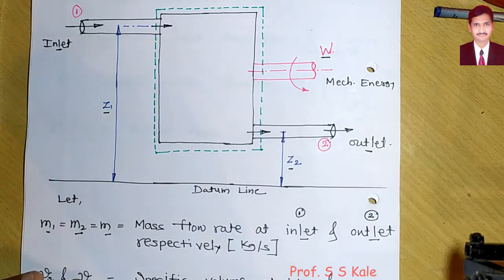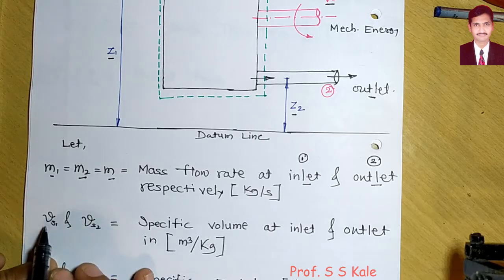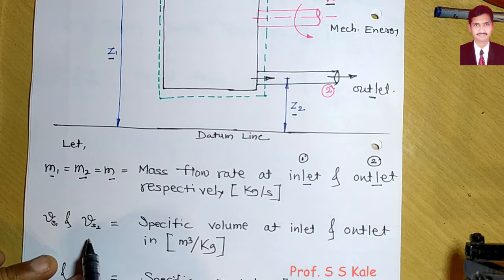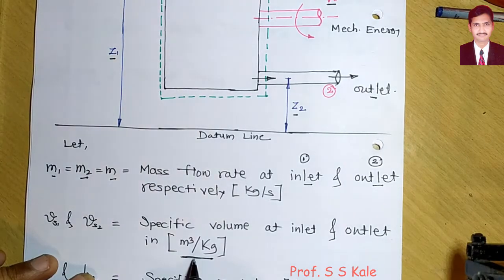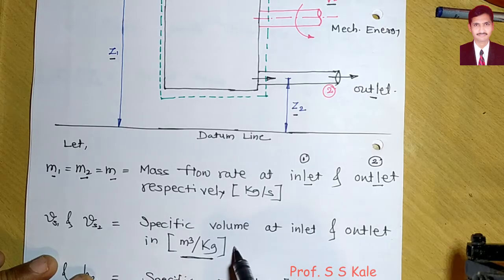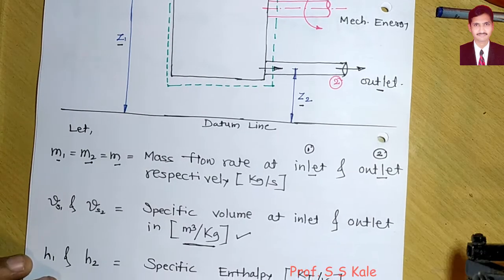Next, Vs1 and Vs2 are the specific volumes at inlet and outlet respectively. Specific quantities are per unit mass, so specific volume is volume per unit mass with unit m³/kg.